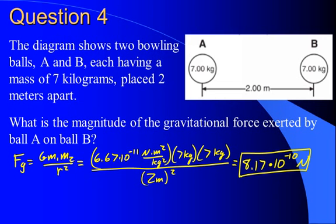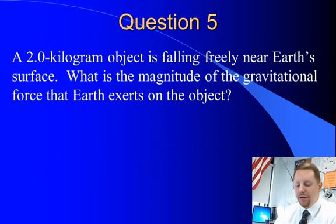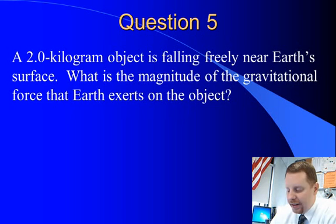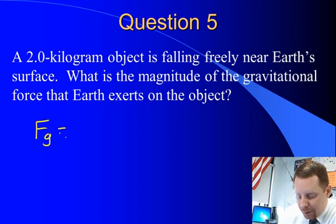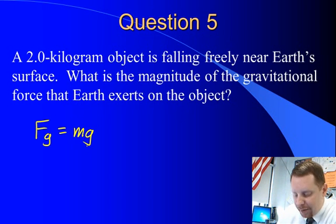Alright, let's take a look at one last problem. A 2 kg object is falling freely near Earth's surface. What is the magnitude of the gravitational force that Earth exerts on the object? Well, the magnitude of the gravitational force that Earth exerts on the object, gravitational force, is also equal to the object's weight, mg. That's another word for weight.